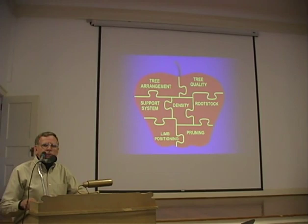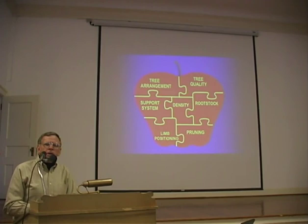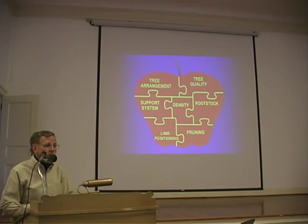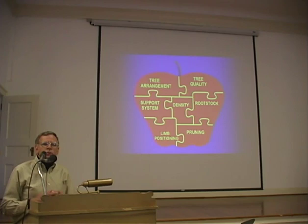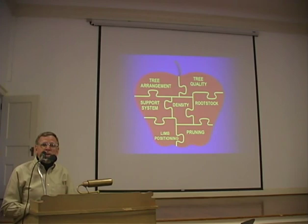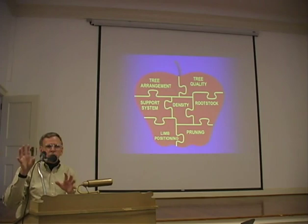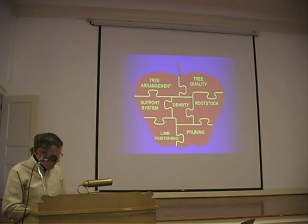When you think of an orchard system — a slender spindle or a Tortura trellis, for example — you often define that system by the tree training aspects, just the bottom two pieces of this puzzle. I'd like to encourage you to think more broadly, because it doesn't pertain just to how it's pruned and trained. It also pertains to the rootstock, the tree density, the support system, and so on. Don't just think about a system as how it's pruned and trained, but consider all the components.